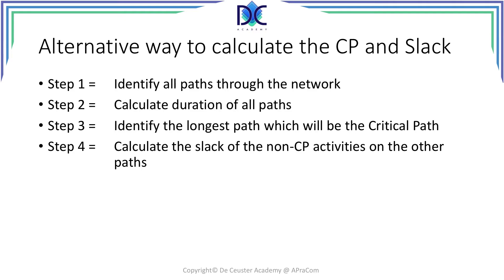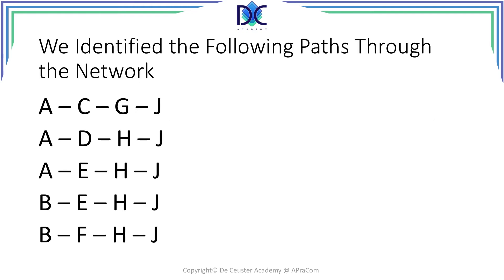Let's have a look at an alternative way to calculate the critical path and the slack of the activities. Let's consider four steps. Step one: identify all the paths through the network — we already did that in one of the previous sessions, so we will reuse that information. Step two: calculate the duration of all these paths. Step three: identify the critical path by finding the longest path through the network. Then we can calculate the slack of the activities on the non-critical paths. Let's come back to the identified paths through the network.